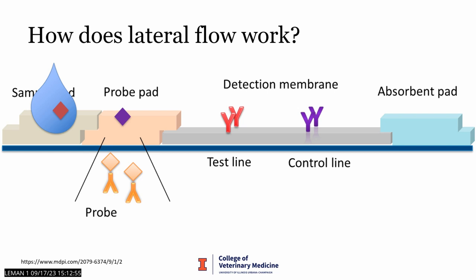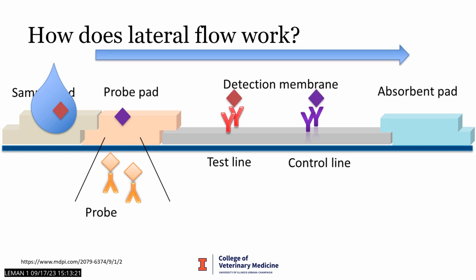The antigen in the test binds gold-tagged antibodies as the sample passes through the probe pad. As the sample moves over the detection membrane, the tagged antibody-antigen complex is captured by another immobilized antibody and a visible line is seen. Control particles are also captured by antibodies and the rest of the sample is absorbed into the absorbent pad.